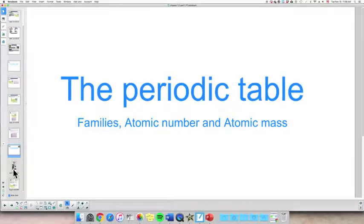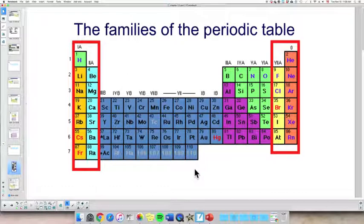When I talk about families, I'm talking about specific groups. We said that groups are basically the columns in the periodic table. There are four groups, and I've identified them with my two red rectangles. There are four groups that we also call families because these groups have special properties that are either fairly common or have been studied a lot or are very useful in everyday life.